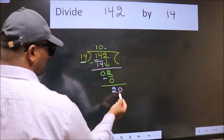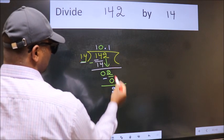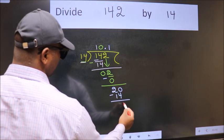So 20. A number close to 20 in 14 table is 14 once 14. Now we subtract. We get 6.